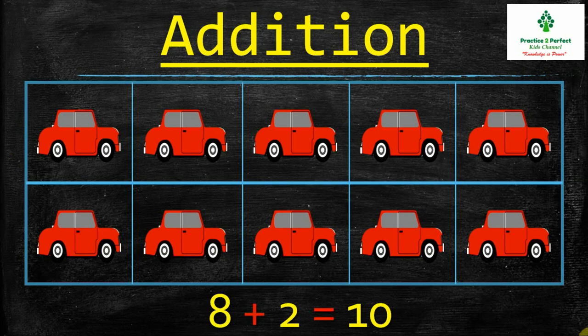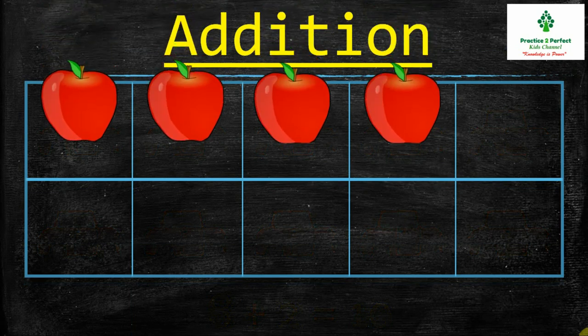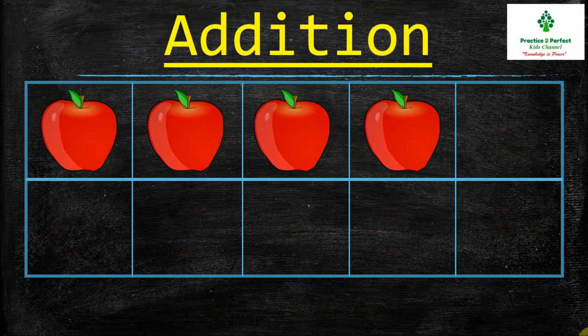So I added 2 more cars to get a total of 10 cars. Let us see another example. This ten frame shows 4 apples. If I give you 3 more apples, then how many apples do you have now in total?